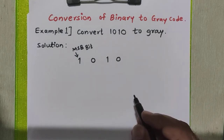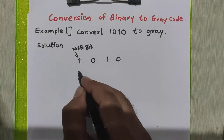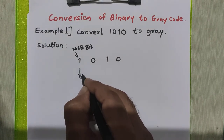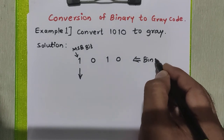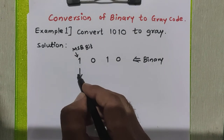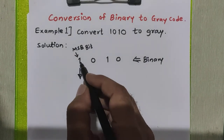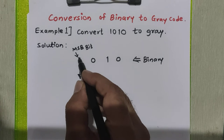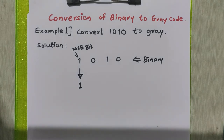The steps to convert any binary number to grey code: first, we have to copy the given binary's MSB bit as it is into the grey code. So this is the first bit of the grey code for this number.